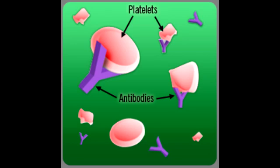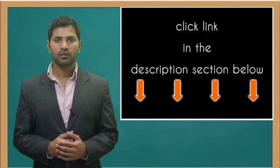Describe the platelet count and the bleeding time in Idiopathic Thrombocytopenic Purpura. All platelet disorders will have an increase in the bleeding time, but there would also be a decrease in the platelet count in ITP, and this is due to the fact that the splenic macrophages are destroying these platelets.